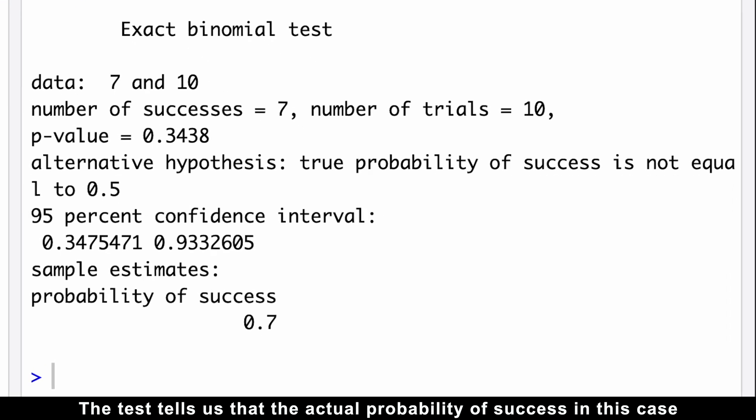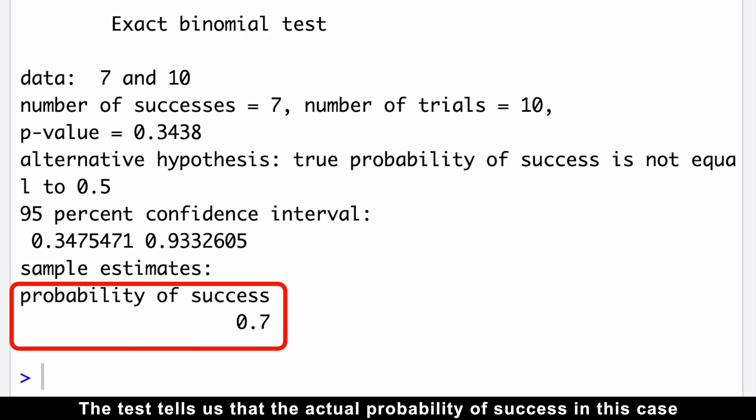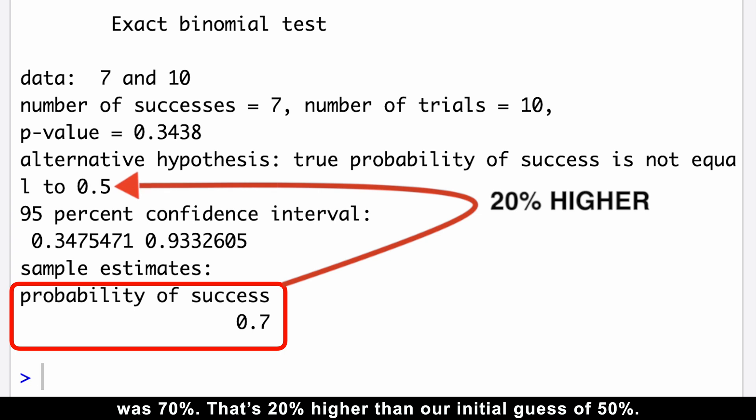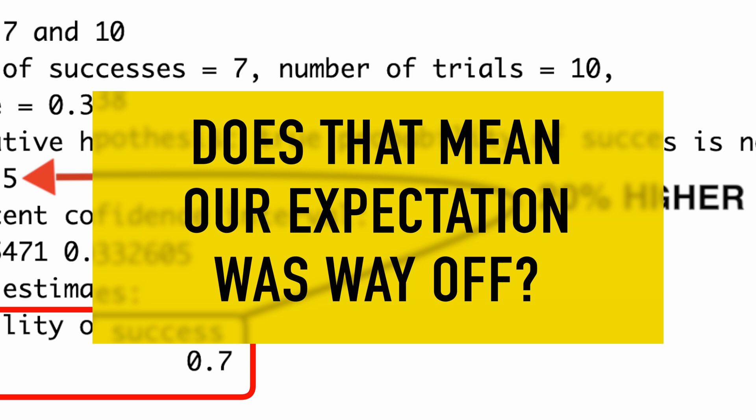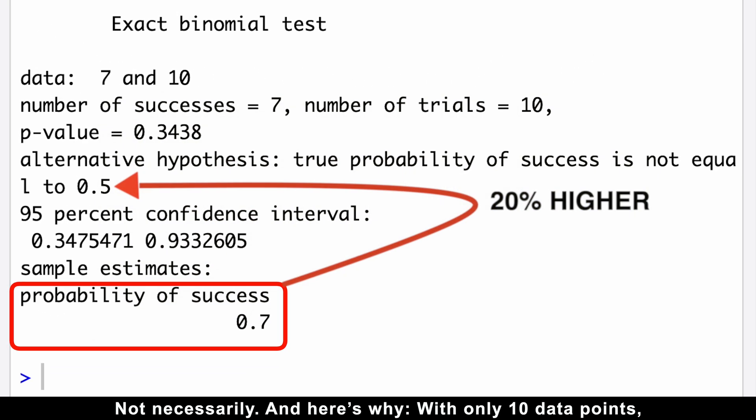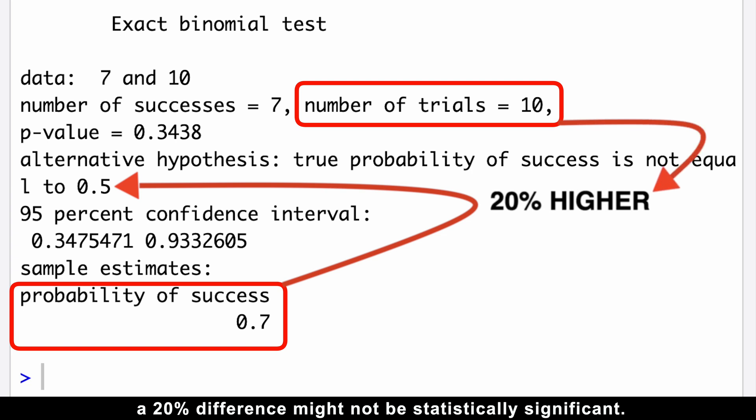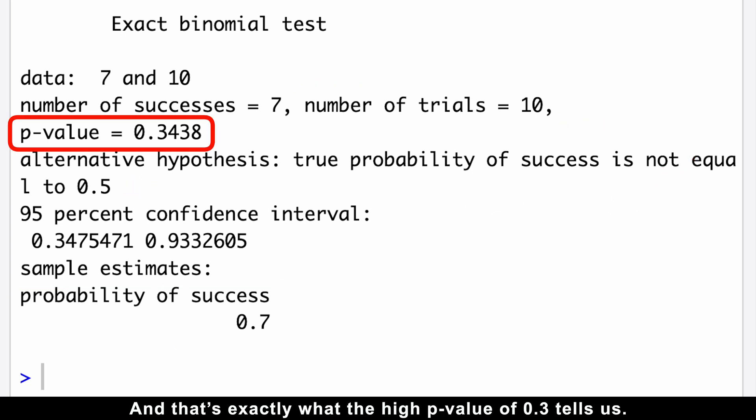The test tells us that the actual probability of success in this case was 70%. That's 20% higher than our initial guess of 50%. Does that mean our expectation was way off? Not necessarily. And here's why. With only 10 data points, a 20% difference might not be statistically significant. And that's exactly what the high p-value of 0.3 tells us.